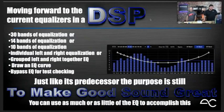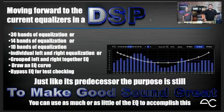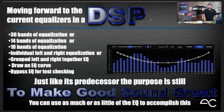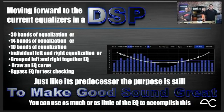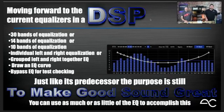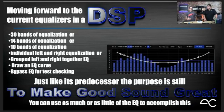Moving forward to current equalization in a DSP: we have 30 bands of equalization, or the option for 14 bands, or 10 bands — basic, better, and advanced. Not every install or channel needs 30 bands of EQ. It's nice to have options. We also have individual left and right equalization, or grouped left and right together. For example, when doing tweeter and mid front stage, equalize each side individually. In the rear I just do it as a group — it's rear fill, I don't need to spend an hour worrying about whether one tweeter is a dB louder than the other.